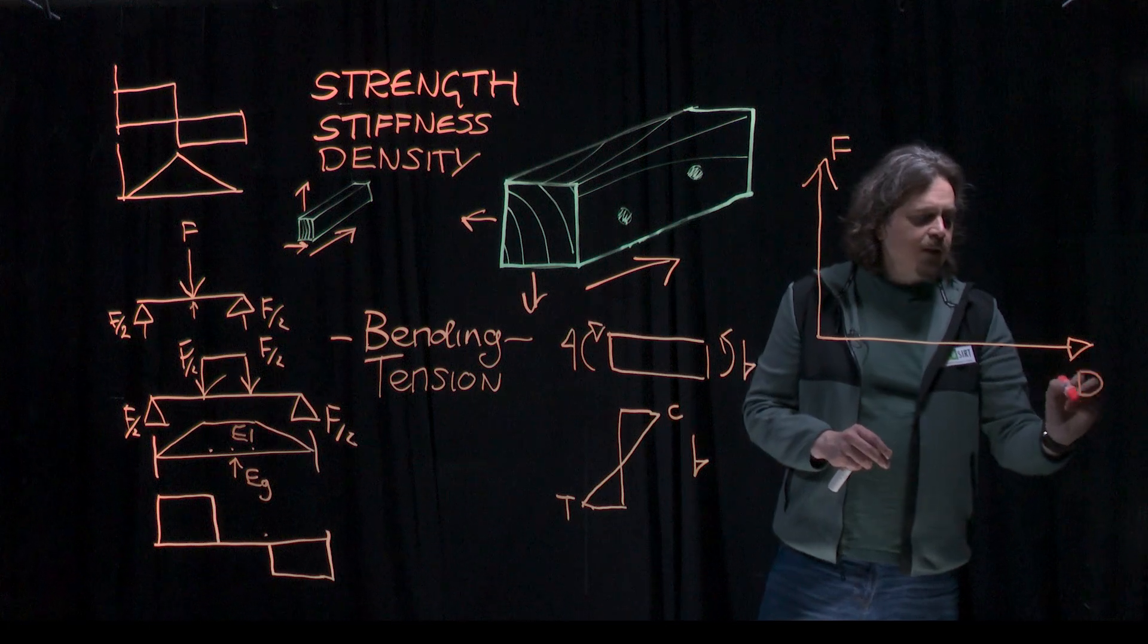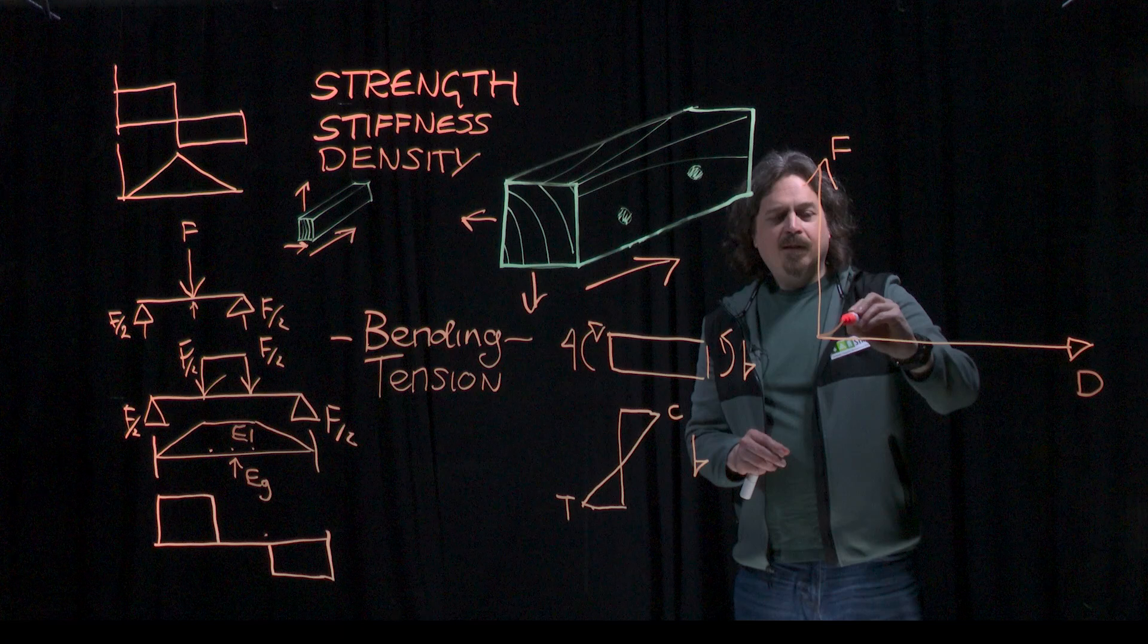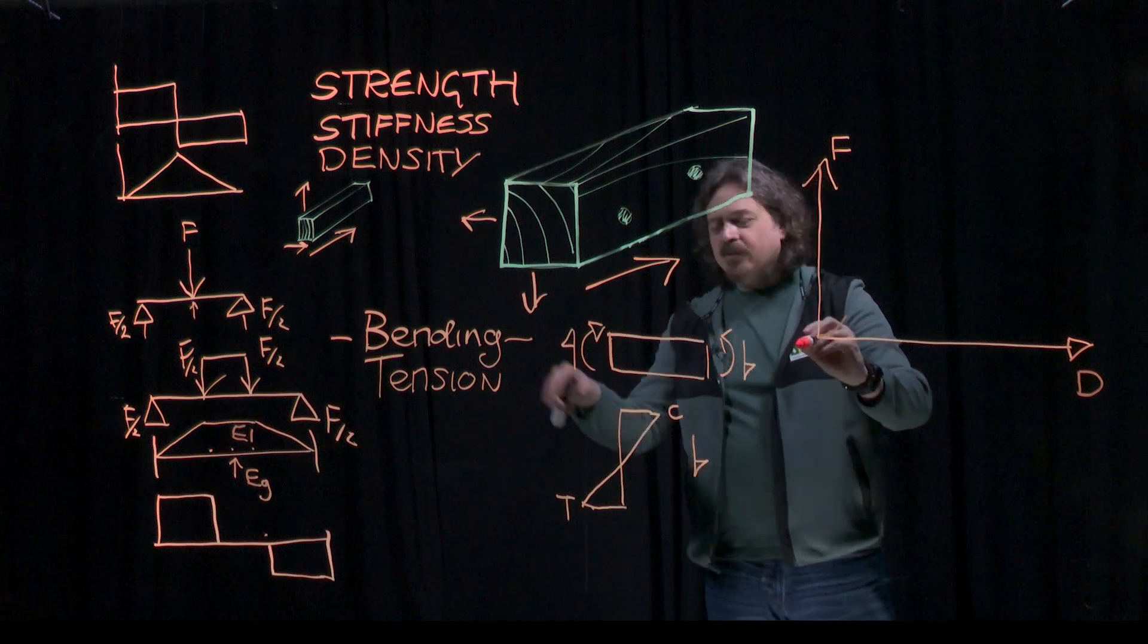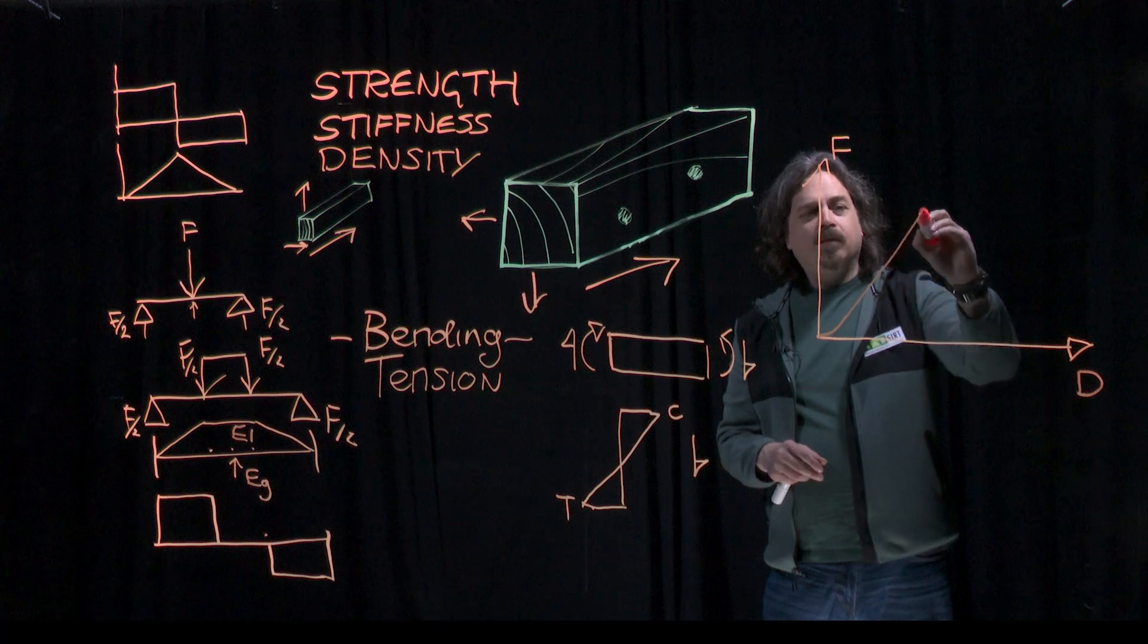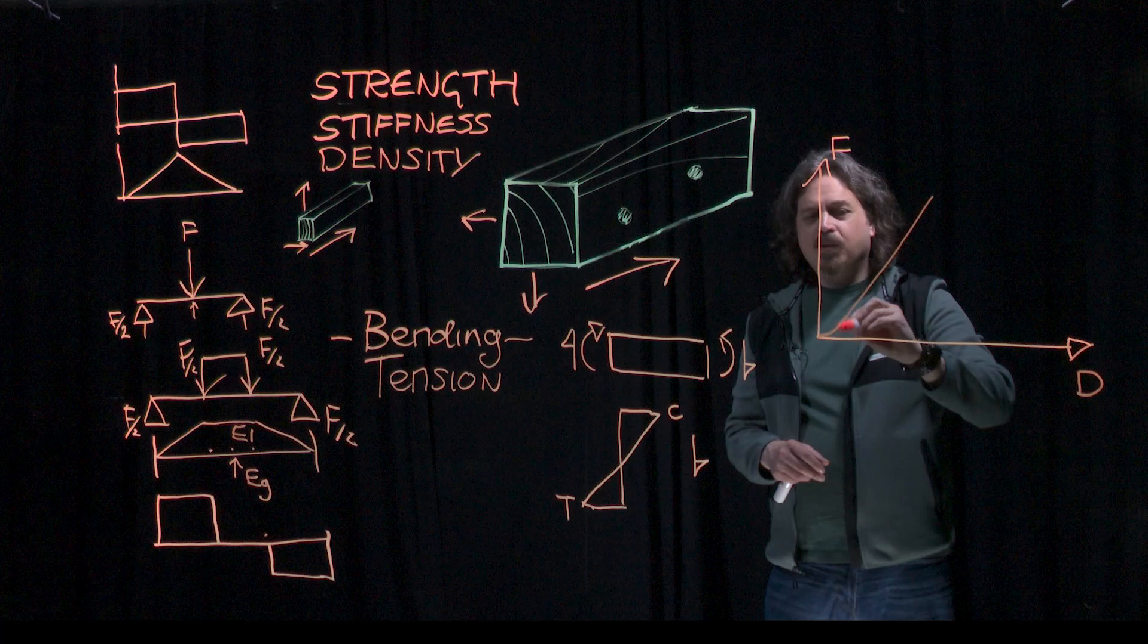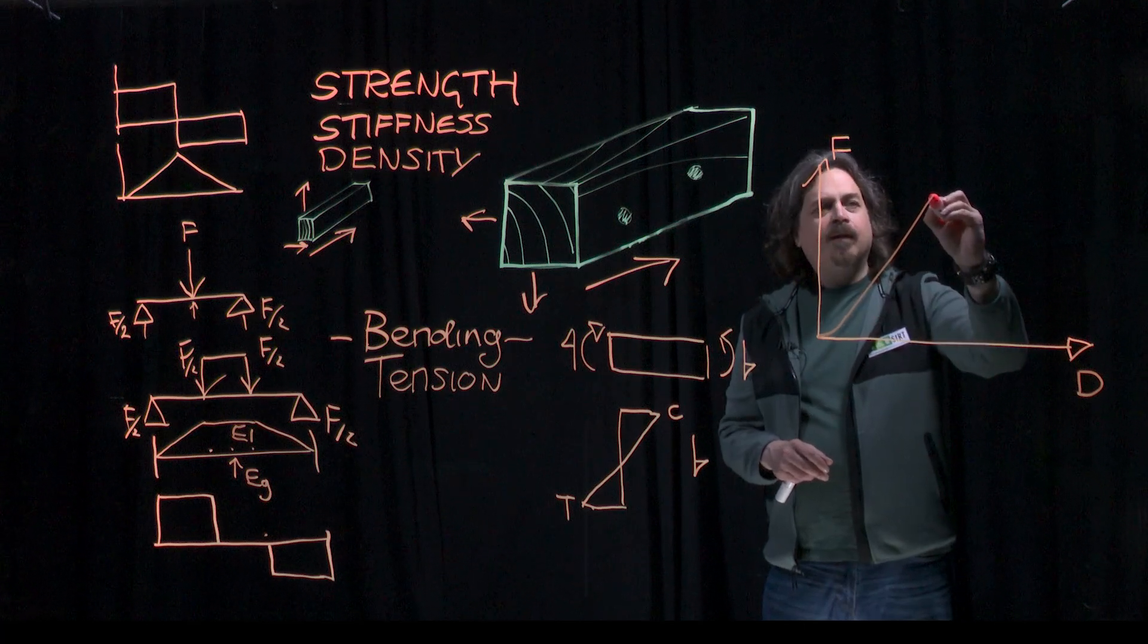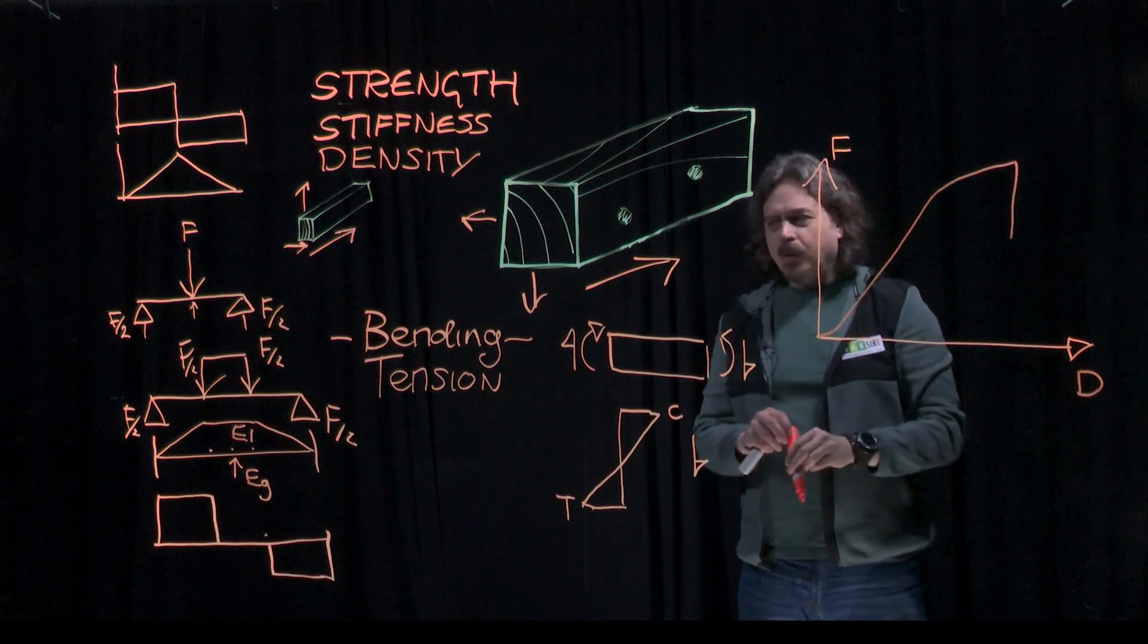So over here, you have your deflection that you're measuring. To begin with, there will be a little bit of bedding in of the test because you can't set it up perfectly. And then once the load is starting to be applied properly, you have a nice straight line because wood is obeying Hooke's law. And then as the material starts to break, it will reach a certain point and then break.